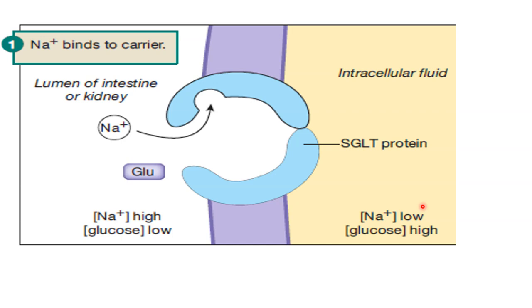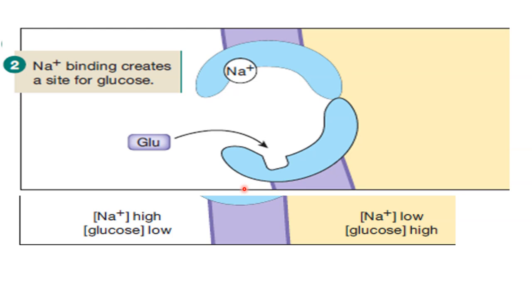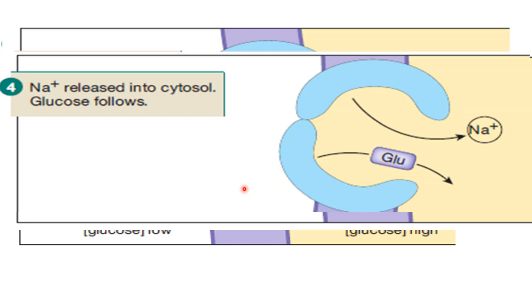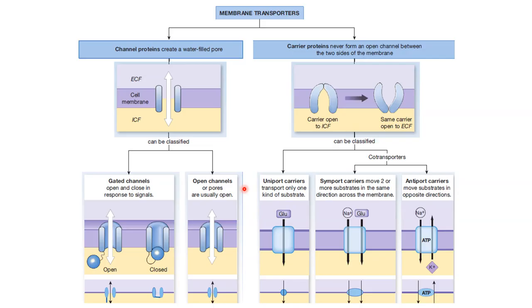For coupling — we use the term coupling for this type of arrangement. Coupling means clubbing two things together — here sodium is coupled with another substance. Uphill and downhill are also terms used. This summarizes membrane transport: channel means passive transport, simple diffusion. Carrier protein may be active or passive — passive is for facilitated diffusion, active is for primary active and secondary active transport.